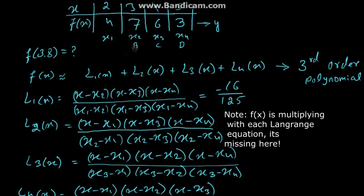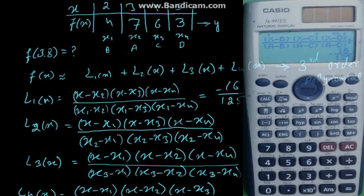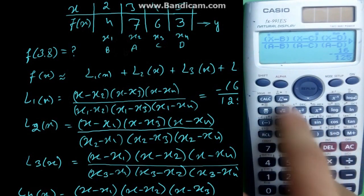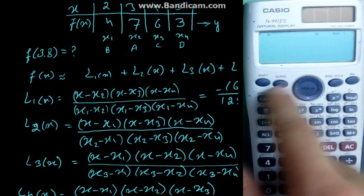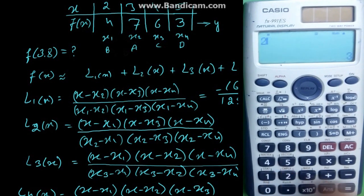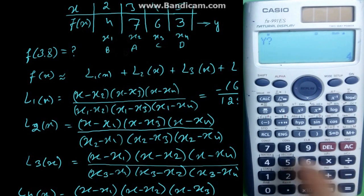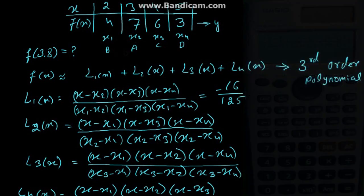Now to find L2 of x, exchange a and b for x1 and x2. So having the same function. For x, enter 3.8. For b, enter 2. For c, enter 4. For d, enter 5 and for a, enter 3. For y, enter 7. It gives 189 by 125.